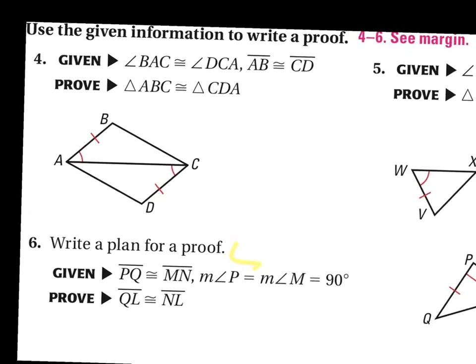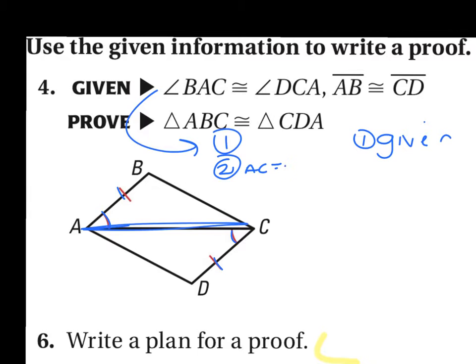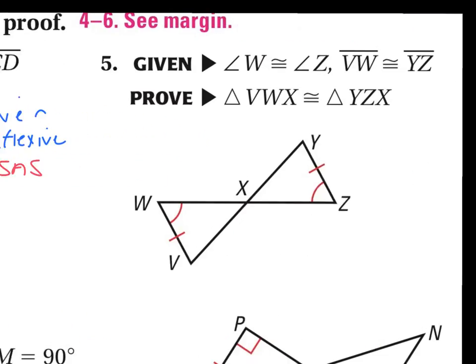Number four on the quiz portion: given that angle BCA is congruent to angle DCA, and AB is congruent to DC, state your given. Then state the obvious — there's a shared side: AC equals AC, and that's reflexive. Right there you've got enough to prove the triangles are congruent, and it's side-angle-side.